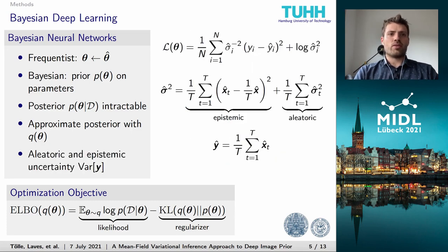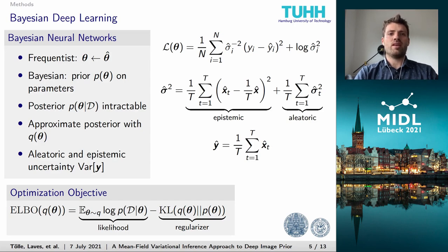As our weights follow a distribution, so does our output. The biggest advantage of Bayesian methods is their ability to quantify uncertainty by analyzing the variance of that output, which is especially interesting in medicine. We can capture the full uncertainty by altering our mean squared error to learn the aleatoric uncertainty — the uncertainty or noise inherent in the data — implicitly from that data. The full predictive uncertainty is then obtained by also taking the variance of the output into account, known as epistemic or model uncertainty. The mean prediction is simply obtained by taking the mean of T predictions.